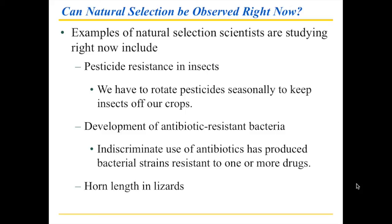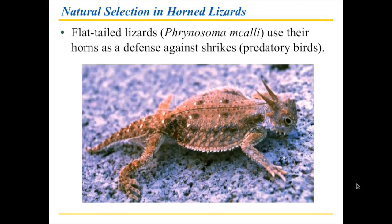The example here is horn length in lizards — an almost local example. These are also known as horny toads, but they're actually lizards. They have horns at the back of their head. As a defense, they can arch their head backwards so that a predatory bird grabbing them would get a puncture wound. Or if the bird grabs them on the arm, they can slash sideways. It's a behavior that supports the defensive structure — without the spines, there would be no reason to rear up.